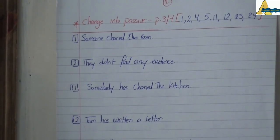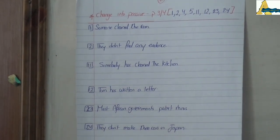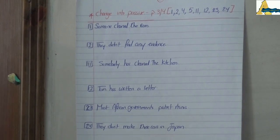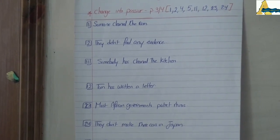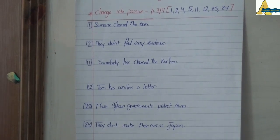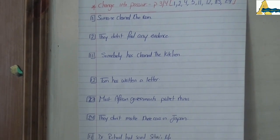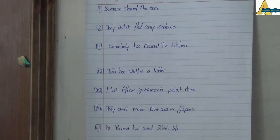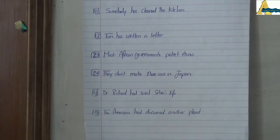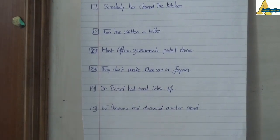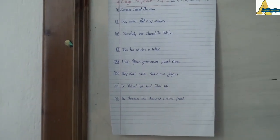In number four, 'Dr. Richard has saved Sylvia's life' — the answer: Sylvia's life has been saved by Dr. Richard. Five, 'the Americans had discovered another planet' — another planet had been discovered by the Americans. 'Somebody has cleaned the kitchen' — the kitchen has been cleaned by somebody. 'Tom has written a letter' — a letter has been written by Tom. 'Most African governments protect rhinos' — rhinos are protected by most African governments. Finally, 'they don't make these cars in Japan' — these cars aren't made in Japan by them. This is how we transfer active sentences into passive.